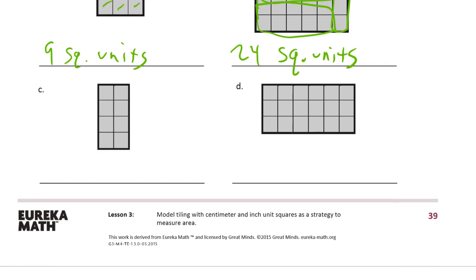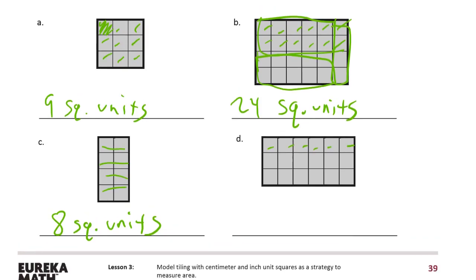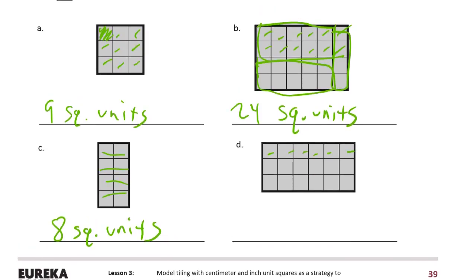C is two, four, six, eight — eight square units. And D is one, two, three, four, five — these are rows of six. We already figured out two, so that's six, and another six would make it 12, and another six makes it 18 — 18 square units.